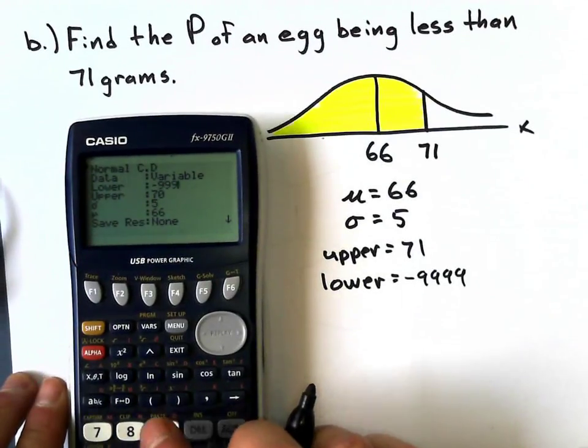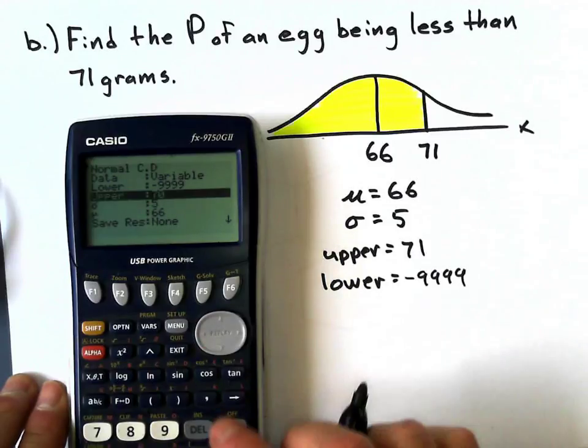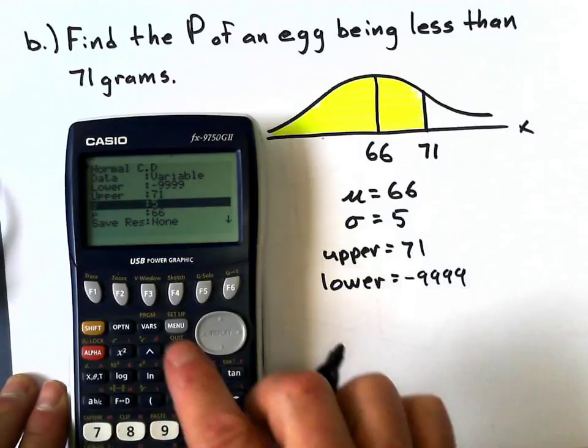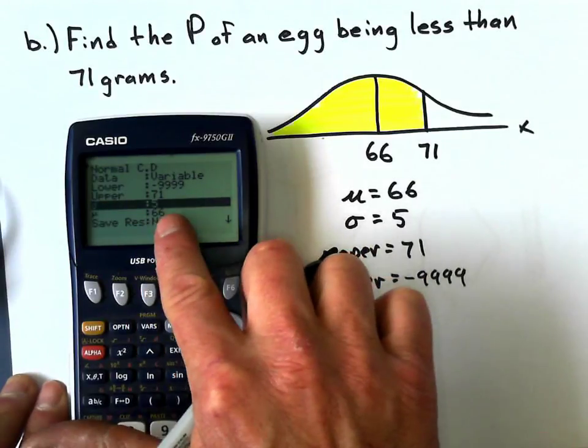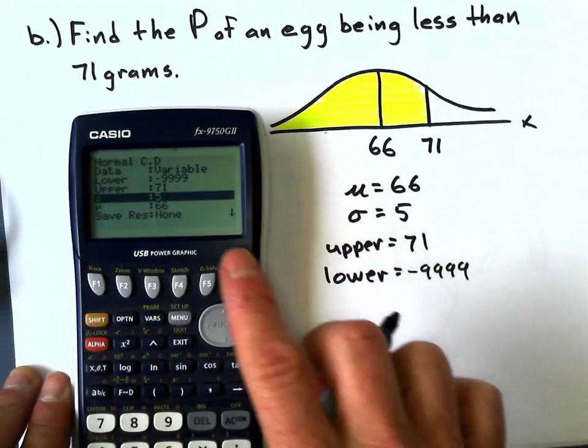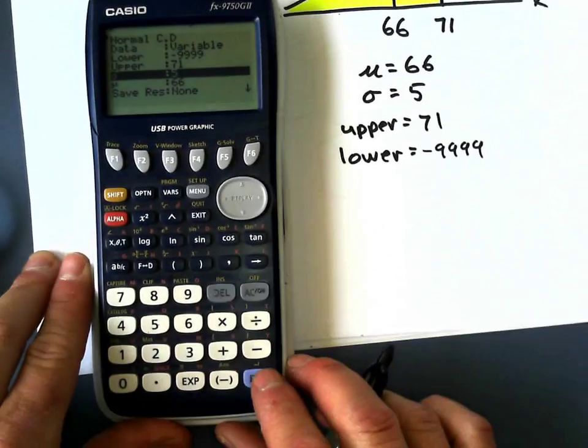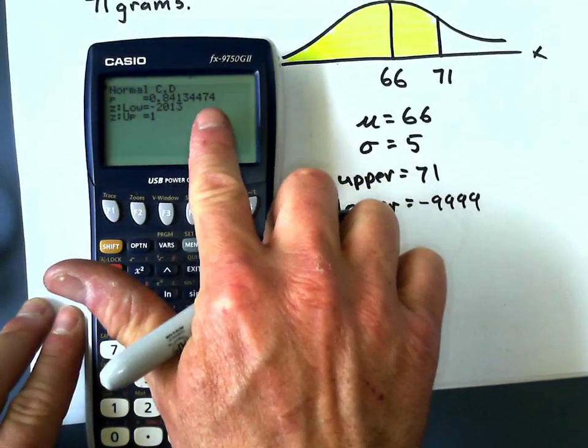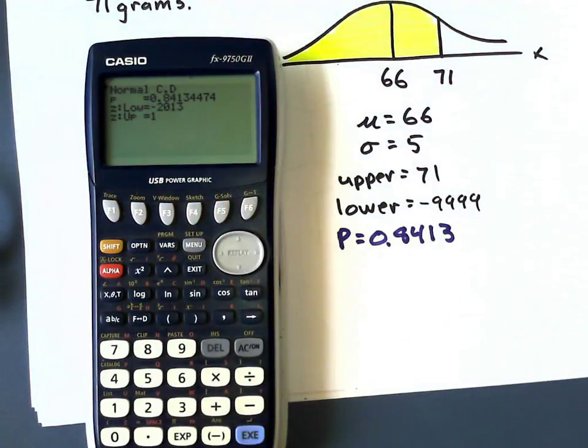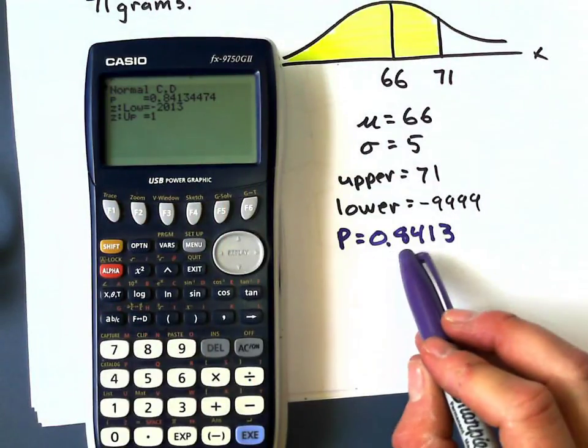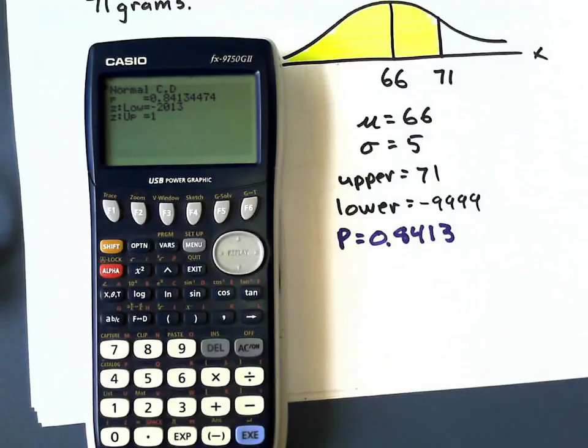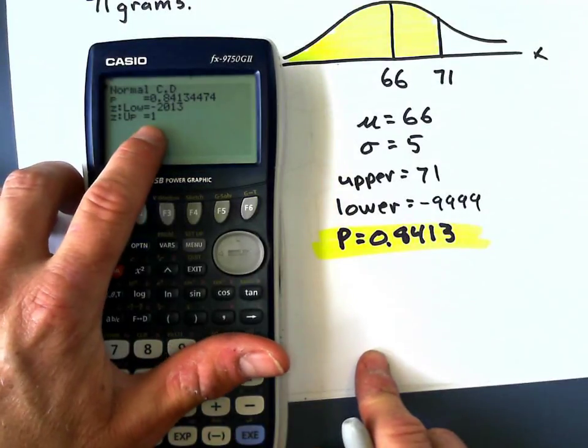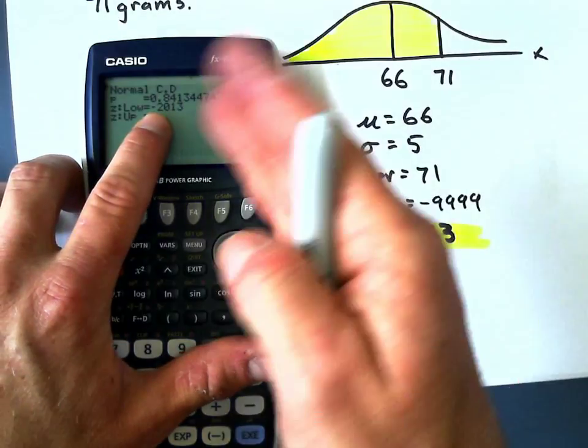So I clear all this stuff. My lower value I'm going to say negative 9999, execute. My upper value 71, execute. These two are the same: standard deviation still 5 and the mean is still 66. I press execute and I get my probability right here to four decimal places: 0.8413.